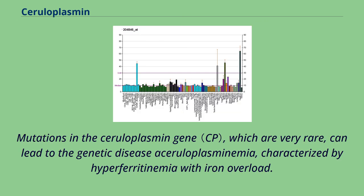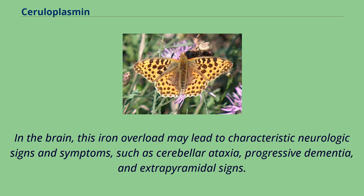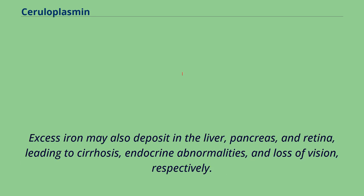Mutations in the ceruloplasmin gene, which are very rare, can lead to the genetic disease aceruloplasminemia, characterized by hyperferritinemia with iron overload. In the brain, this iron overload may lead to characteristic neurologic signs and symptoms, such as cerebellar ataxia, progressive dementia, and extrapyramidal signs. Excess iron may also deposit in the liver, pancreas, and retina, leading to cirrhosis, endocrine abnormalities, and loss of vision, respectively.